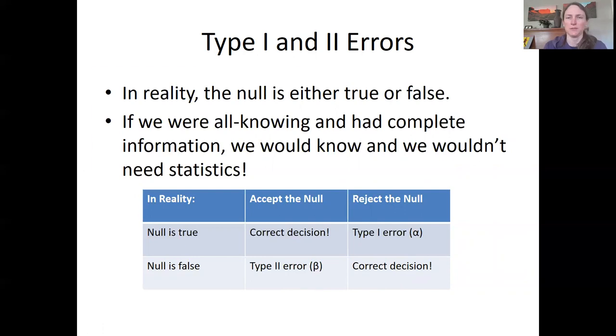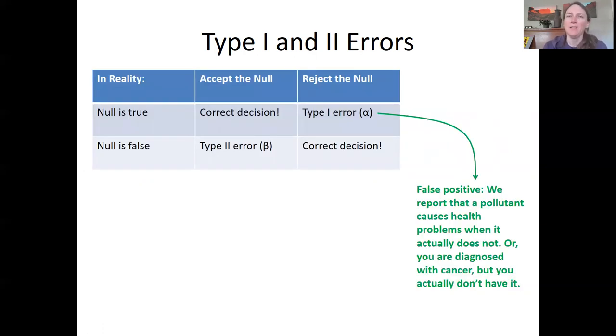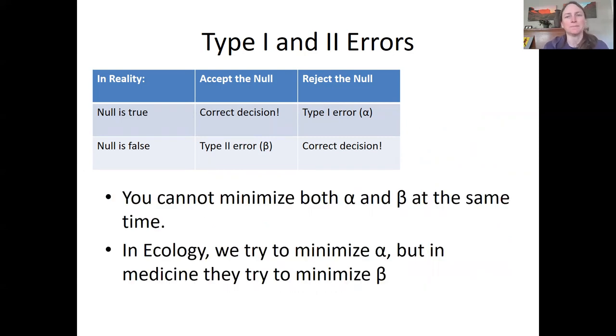So I'm going to talk to you a little bit more about these two types of errors. So type one error, alpha is basically false positive. So say we do a study and we report that a pollutant causes health problems when it actually doesn't, or say you go to the doctor and they tell you you have cancer, but you actually don't. So those are bad things. That's a little different. A type two error, beta is a false negative. In this case, they test you for cancer. You test negative, but you actually have it. So there's some differences in terms of different types of sciences. In ecology, we try to minimize type one errors, and in medicine they try to minimize type two errors.